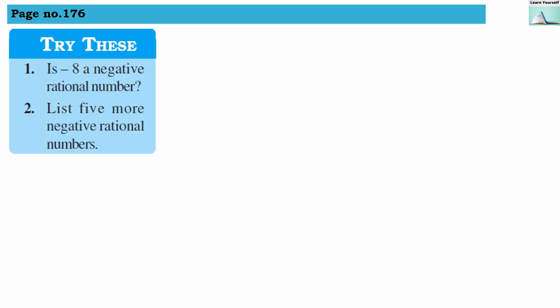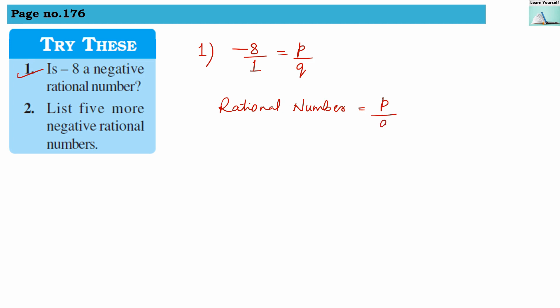Try this sum from page number 176. First question: is minus 8 a negative rational number? The answer is yes. We can write minus 8 as minus 8 divided by 1, so it is in the form of p divided by q. Rational numbers should always be in the form of p divided by q, where q can never be 0. Here, the denominator is not 0, so yes, minus 8 is a negative rational number.